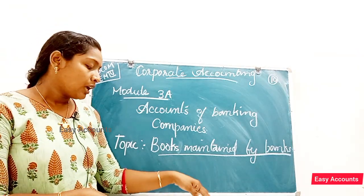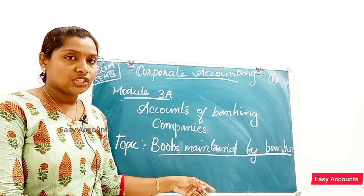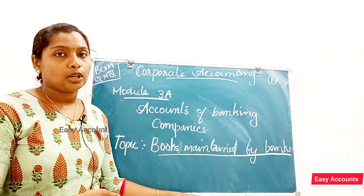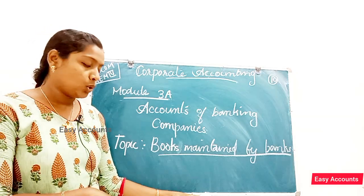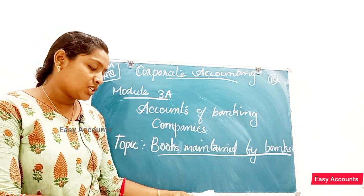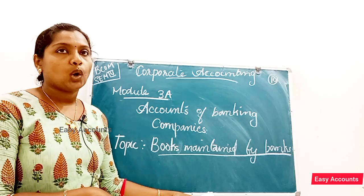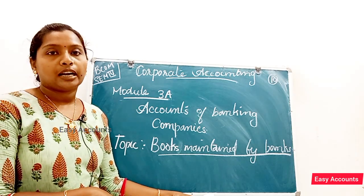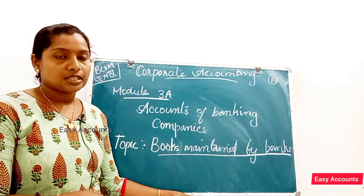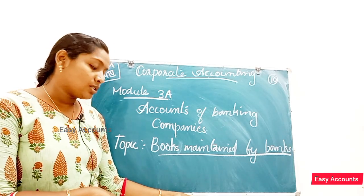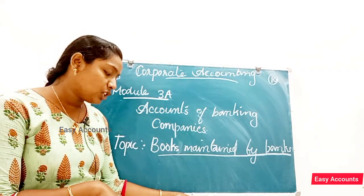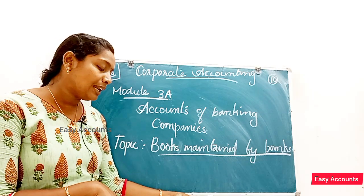This is the Register section. Registers maintained by banks include: the bill for collection register, the securities register — when a loan is provided, collateral securities are recorded — the document register, standing order register, cheque dishonoured register, draft issue register, draft payable register, DD register, and foreign letter of credit register.